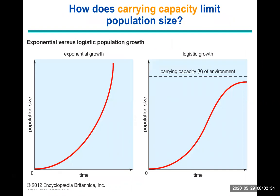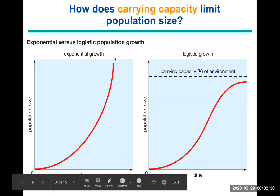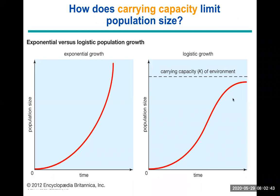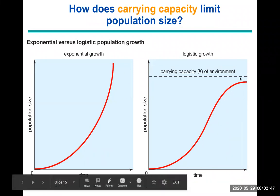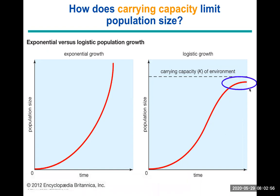Comparing two important growth curves: exponential growth produces a J-shaped curve, while logistic growth produces an S-shaped curve. In the S-curve, the population grows steadily but then stabilizes. This stabilization is caused by what we call carrying capacity, represented by the letter K — the limits the natural environment sets for a species based on habitat availability, food sources, water access, and ability to find mates.